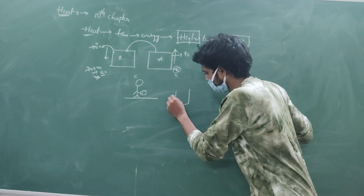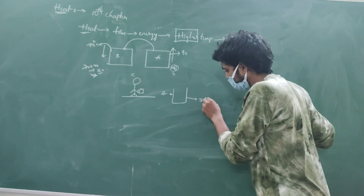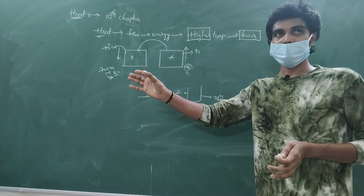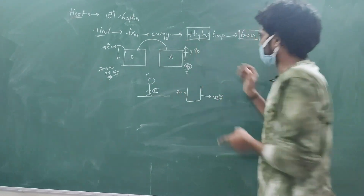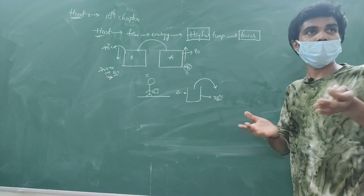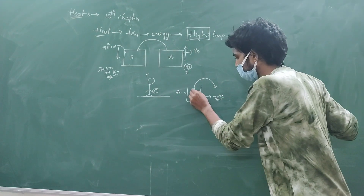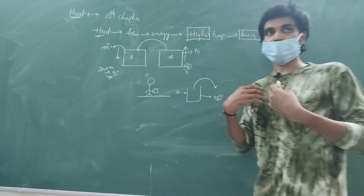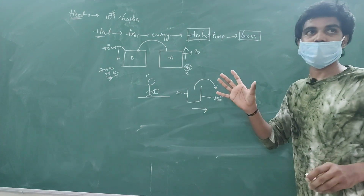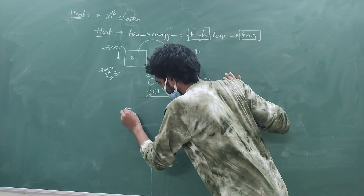The temperature is 90 degrees centigrade. Our body temperature is 37 degrees centigrade. The heat energy transfers from the body at higher temperature to the body at lower temperature. So what does our body transfer to the tea glass? It feels like we are giving heat energy from our body to the glass.